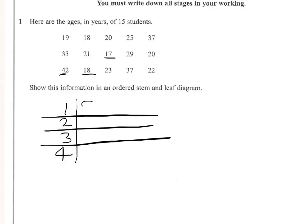So we've got running across the top, we've got 19, 18, 20, 25, 37, that's the top line. Then we've got 33, 21, 17, 29 and 20. Then finally we've got 42, 18, 23, 37 and 22.